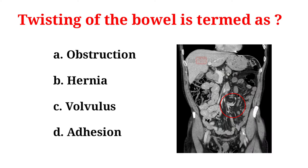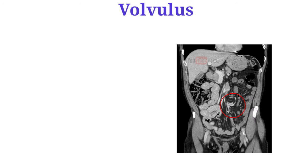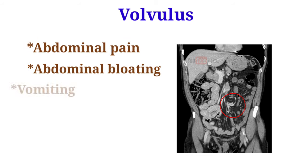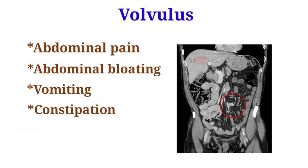Twisting of the bowel is termed as: A. Obstruction. B. Hernia. C. Volvulus. D. Adhesion. And the correct answer is C. Volvulus. A volvulus is when a loop of intestine twists around itself and the mesentery that supports it, resulting in a bowel obstruction. Symptoms include abdominal pain, abdominal bloating, vomiting, constipation, and bloody stool.